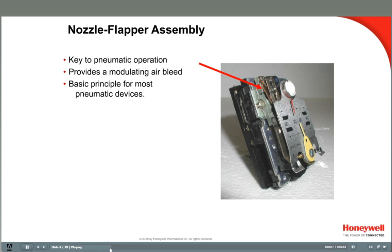The air that leaves the pressure-reducing valves is called main supply air. It goes out to each of the thermostats and controllers in the system. Inside the pneumatic controller is a simple but effective device called a nozzle flapper. It provides a way to bleed off supply air to deliver a modulated output control signal in the branch line. This air pressure in the branch line is a modulating output signal that operates valve or damper actuators or pneumatic relays.